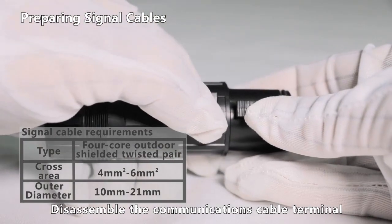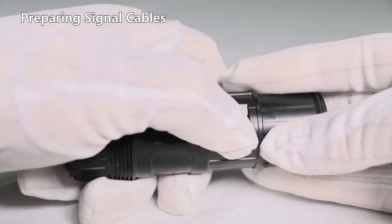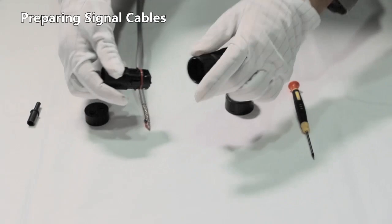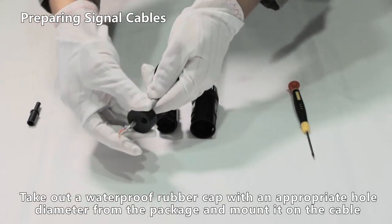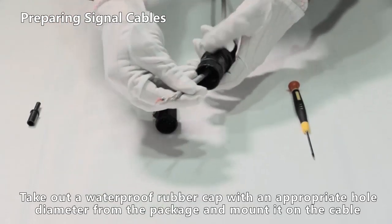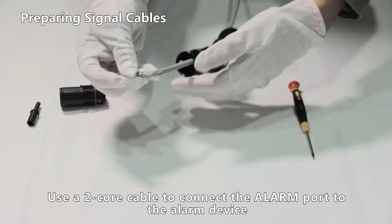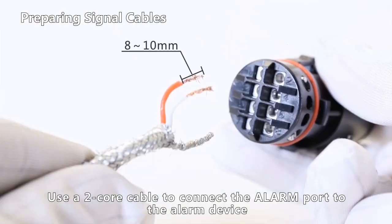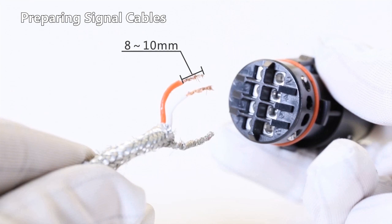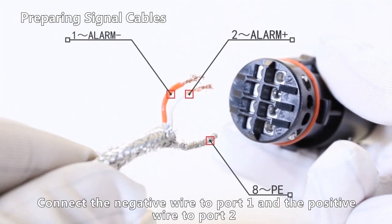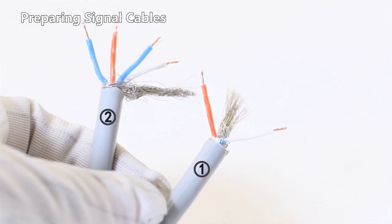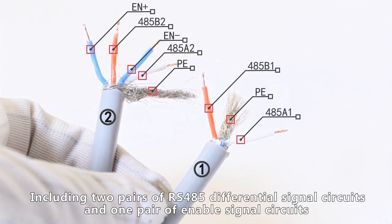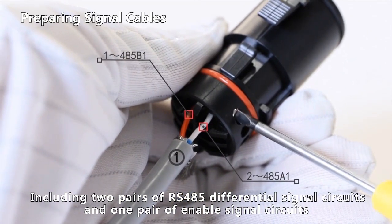Disassemble the communications cable terminal. Take out a waterproof rubber cap with an appropriate hole diameter from the package and mount it on the cable. Use a 2-core cable to connect the alarm port to the alarm device. Connect the negative wire to port 1 and the positive wire to port 2. Connect the shield layer of the cable to port 8. Use two 4-core cables to connect the COM port, including two pairs of RS-485 differential signal circuits and one pair of enable signal circuits.